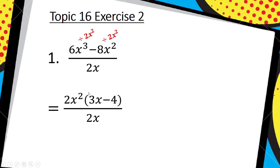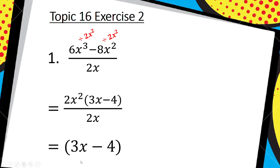6 divided by 2 gives me 3; x cubed divided by x squared gives me x. Then 8 divided by 2 gives me 4, and x squared divided by x squared — they cancel out, so you're left with 1, meaning 4 times 1 is 4. Then the 2s cancel and one of the x's in the denominator cancels with one in the numerator, leaving 1x in the numerator. So it should be x open bracket 3x minus 4, and you leave it like that: x(3x − 4).